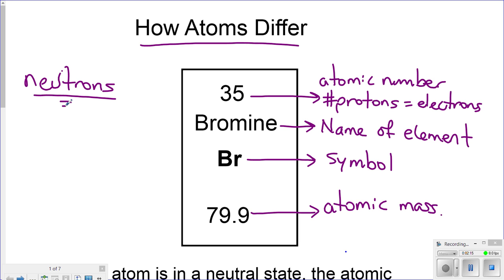Well, neutrons is simply the mass number, or the atomic mass, same thing, minus the atomic number.